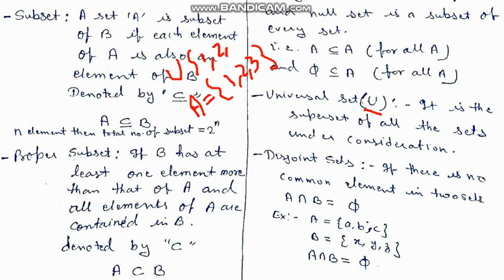It will contain 1, 2, 3. All the natural numbers will come in this. So we can represent all natural numbers here. So this is our universal set, which means the universal set contains all the sets.